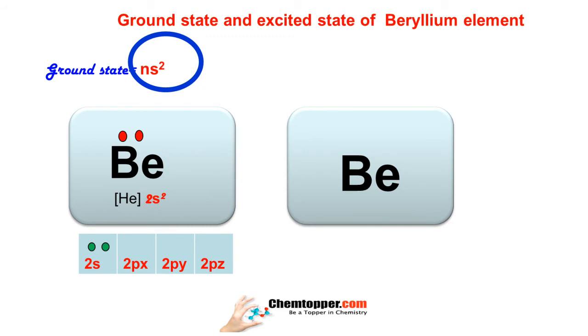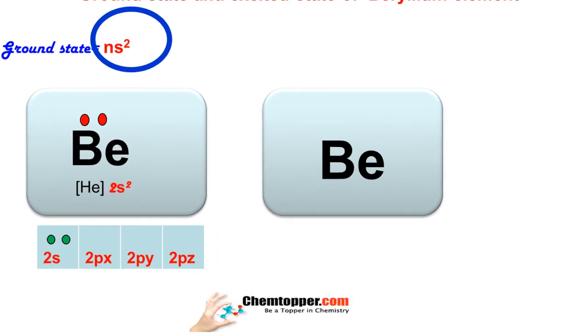Now let's see what happens when beryllium is getting ready to bond with other elements. One of the electrons from the 2s orbital will get excited and will jump to one of the 2p orbitals. The energy difference between 2s and 2p is not so large, so this transition can take place easily.